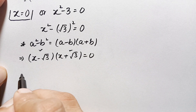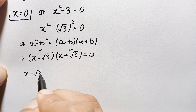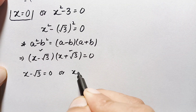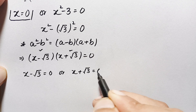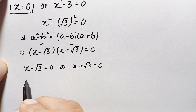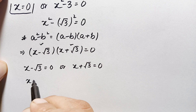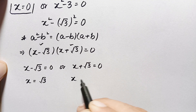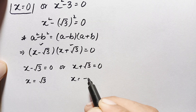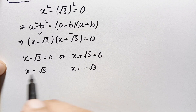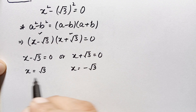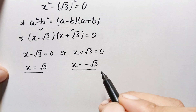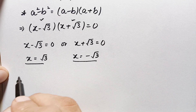Since the product of these two expressions is zero, either x minus √3 equals 0 or x plus √3 equals 0. This gives x equals positive √3 as our second solution and x equals negative √3 as our third solution. So we have three real solutions in total.